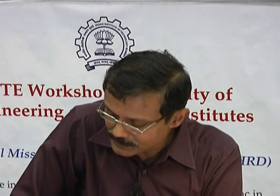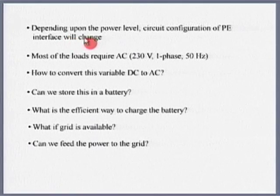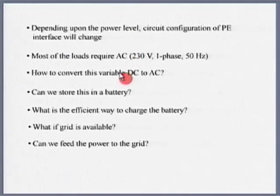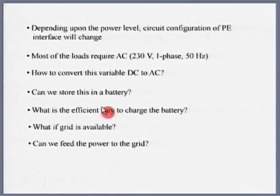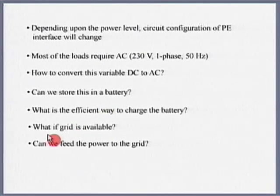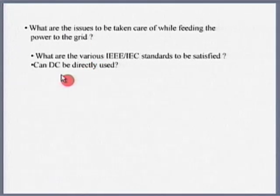In this introductory lecture, I have asked several questions: depending upon the power level, what circuit configuration to choose? If I want AC, what do I need to do? Since the output of solar is continuously changing, I have to first convert DC to AC. If I have to store in a battery, how efficiently can I store and extract that power without compromising battery life? If the grid is available, how do I feed this energy to the grid and what standards must the power electronic equipment satisfy?